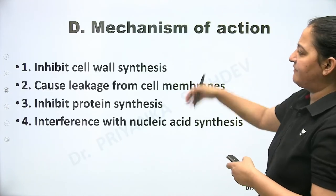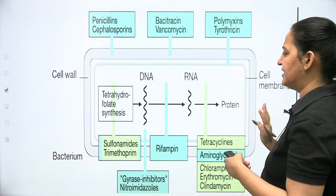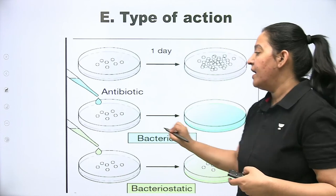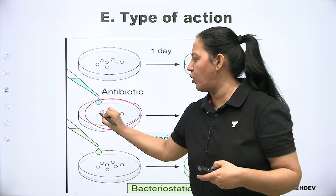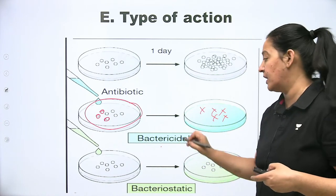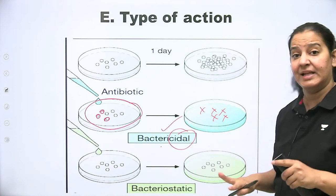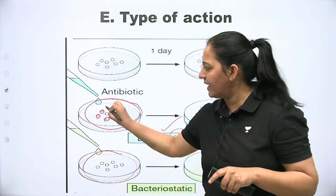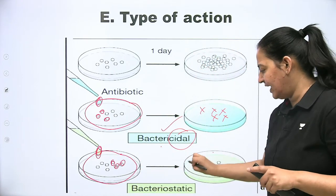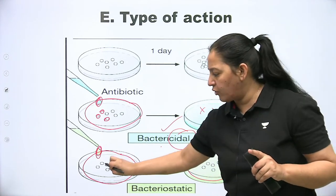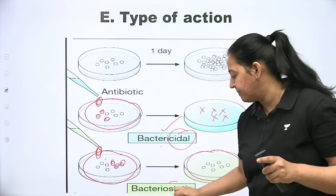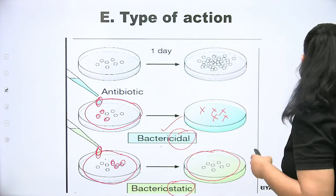Based on type of action, antibiotics are of two types. Bactericidal antibiotics kill the bacteria — on a culture plate, after applying a bactericidal antibiotic, not even a single colony exists. Bacteriostatic antibiotics do not kill bacteria; the existing ones remain but cannot grow further. They inhibit growth and binary fission. Bactericidal means 'killing'; bacteriostatic means the bacteria remain the same in number — existing ones stay but cannot divide.